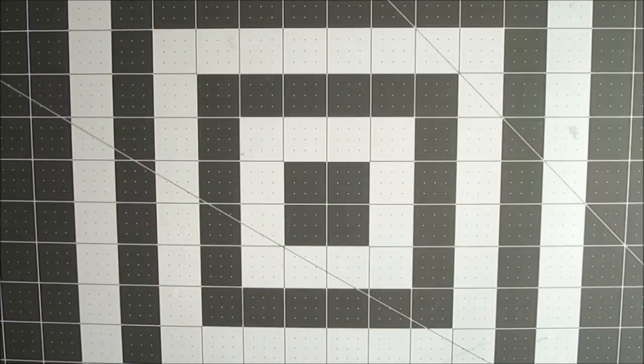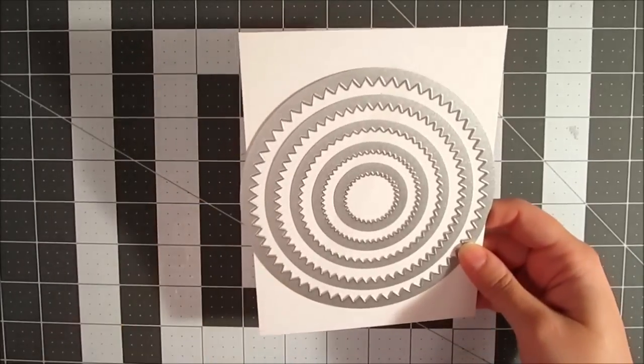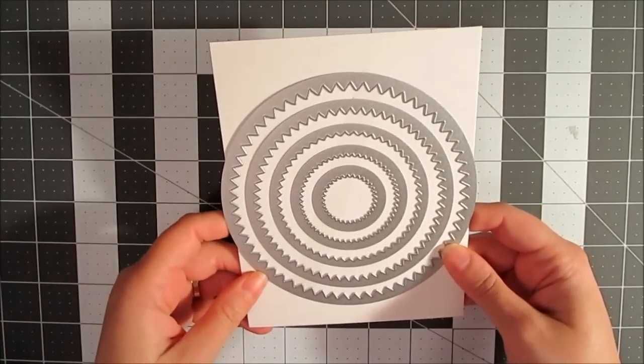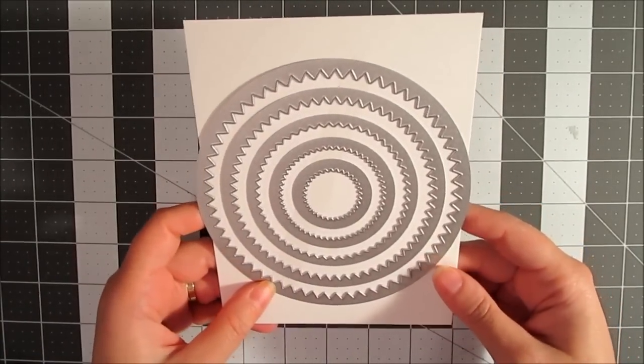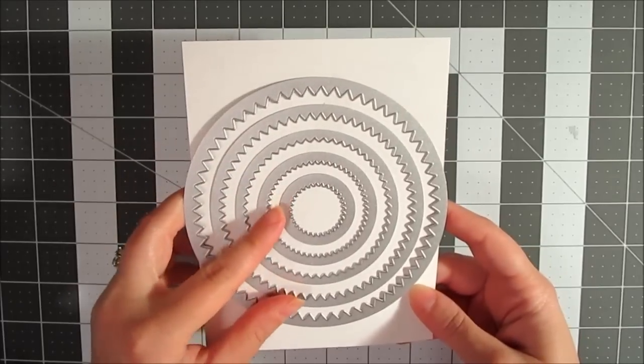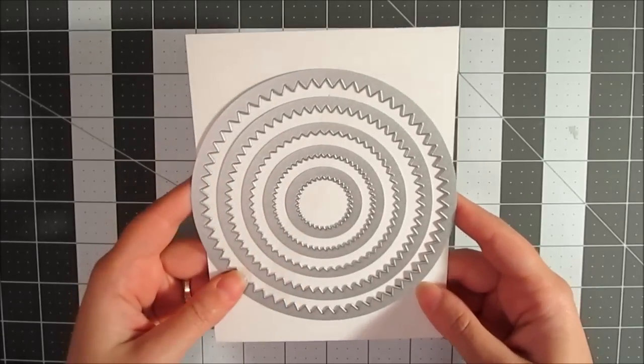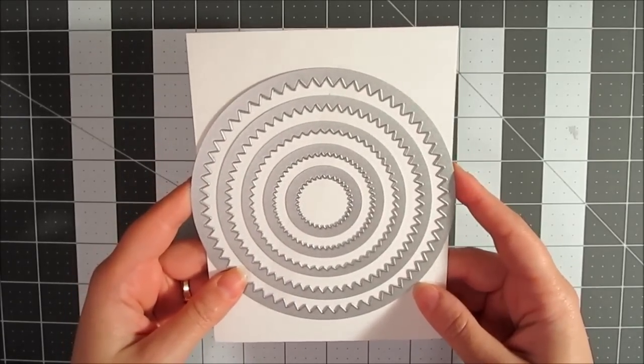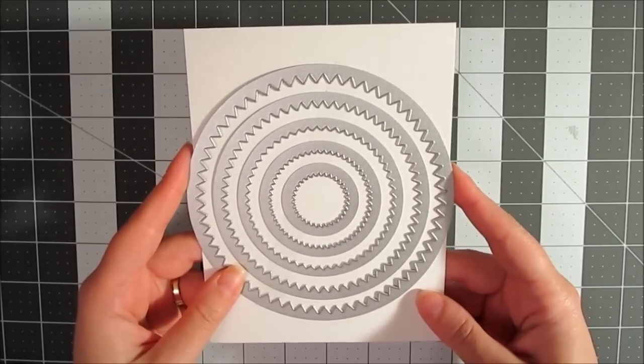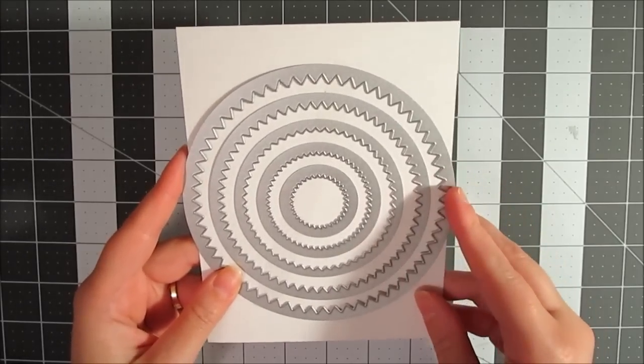He also got me - oh my gosh, my Michael, he's so sweet - he also got me the Starburst Framelits dies and I am super excited to use these. I always love to punch things out on my big shot and these are going to make really cute outlines. I did not get the coordinating stamp set that goes with this because I didn't really like some of the sayings, so I'll just have to be creative on my own with these and I can't wait to try it out.